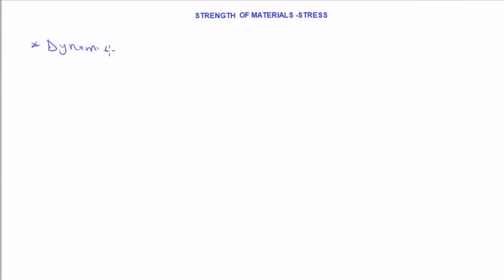Welcome to my channel. In this video we're going to look at strength of materials, which is also known as mechanics of engineering materials. This is a course we are starting with stress. The three fundamental areas of engineering mechanics can be classified into three: we have dynamics, statics, and strength of materials, which could also be termed as the mechanics of engineering materials.